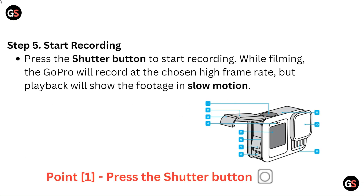Step 5: Start recording. Press the shutter button to start recording. While filming, the GoPro will record at the chosen high frame rate, but playback will show the footage in slow motion. Point 1 shown in the image is the shutter button.